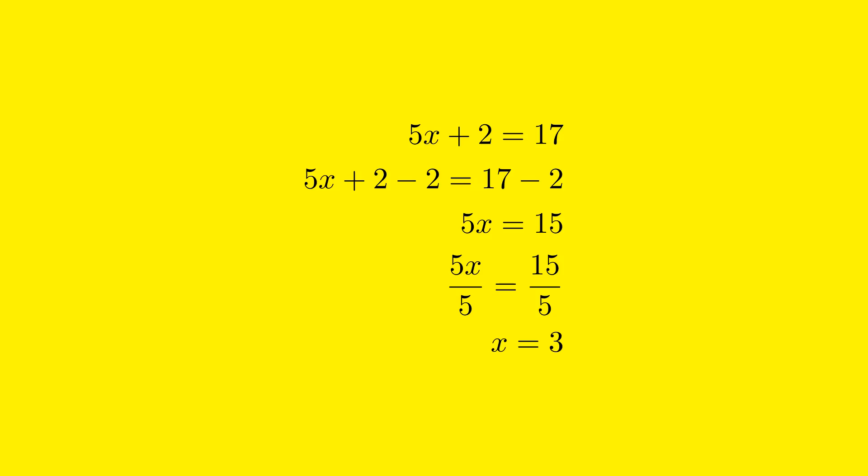The next step is to isolate the variable x further by removing the coefficient of 5 that is attached to the x term. Currently, our equation is 5x equals 15. To do this, we need to divide both sides of the equation by 5. This keeps the equation balanced because we are performing the same operation on both sides.